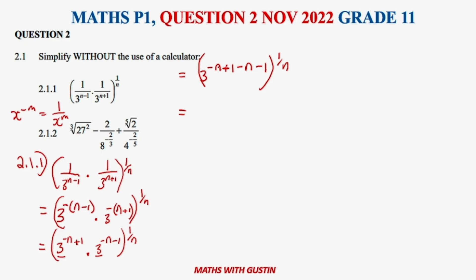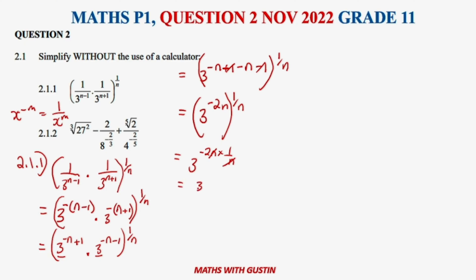We have 3 to the power of: combining negative n and negative n gives minus 2n; positive 1 and negative 1 cancel to 0. So we have 3 to the power of negative 2n, all to the power of 1 over n. Since we are multiplying powers, negative 2n times 1 over n — the n cancels — giving negative 2. Therefore we have 3 to the power of negative 2, which equals 1 over 3 squared, which is 1 over 9.